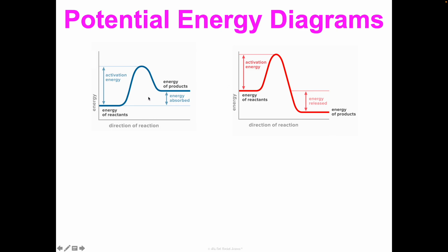Looking at these two potential energy diagrams side by side: notice they both have an activation energy and both require an input of energy to get the reaction started. After that input, the line decreases on both as new bonds form and energy is released. The difference is in the ending versus starting energy levels. In the first diagram, the products have more energy than the reactants — overall energy is absorbed, so it's endothermic. In the second, the products have less energy — overall energy is released, so it's exothermic.